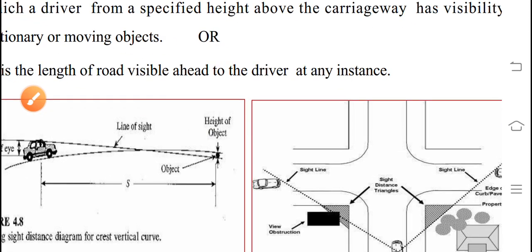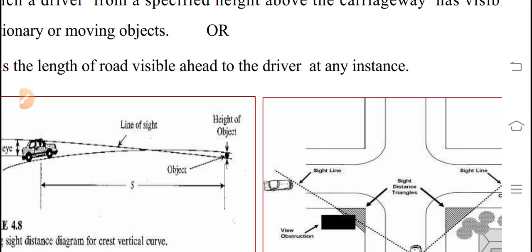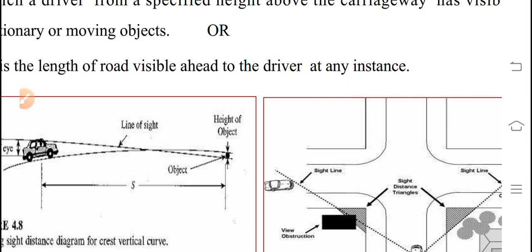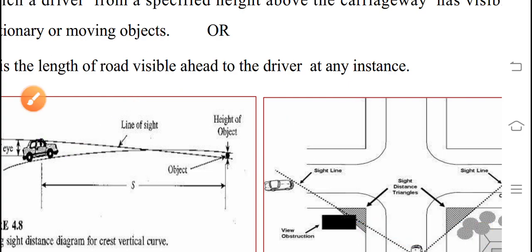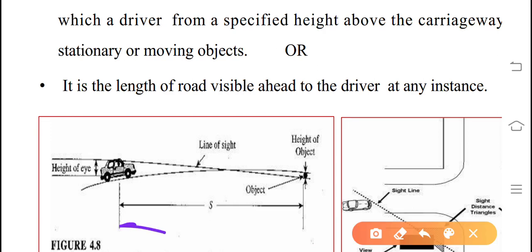There are various situations on horizontal curves, vertical curves, and at intersections where sight distance is to be provided. Suppose this is a car which is moving and there is an object ahead — the height of the driver should be 1.2 meters above the pavement surface and the height of any object is 0.15 meters. This specification is laid down by IRC. This is the stopping sight distance — you have to stop so that you can apply the brake and approach the object without any collision.